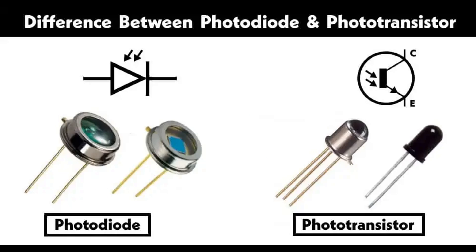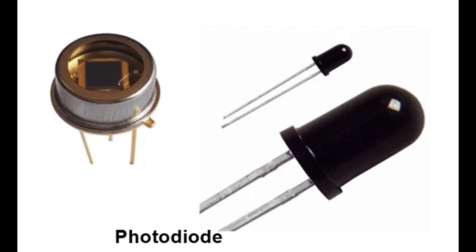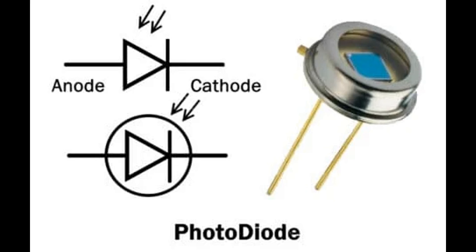Wide spectral response: Photodiodes can be designed to respond to a wide range of wavelengths, from ultraviolet to infrared, making them versatile for different applications. Ease of integration: Photodiodes can be easily integrated with other electronic components and systems, from simple circuits to complex systems. Customizability: Photodiodes can be customized for specific applications by adjusting their material properties, structure, and packaging. Low capacitance allows for faster response times and higher frequency operation, beneficial for high-speed applications.